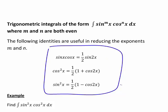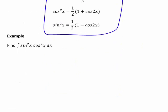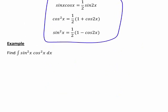So let's have a look at this in the context of an example. Suppose we wanted to find the integral of sine squared x times cos squared x dx. When we're integrating sine squared x times cos squared x with respect to x, which one of these identities will help us?